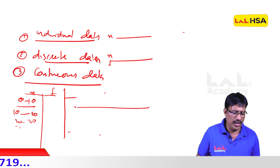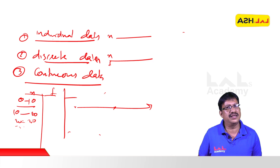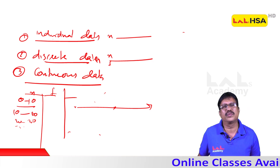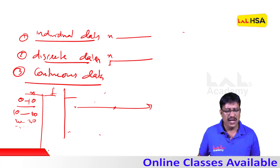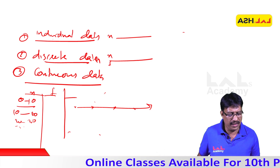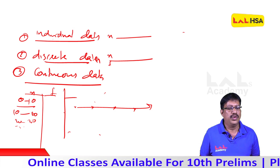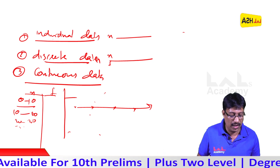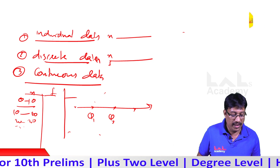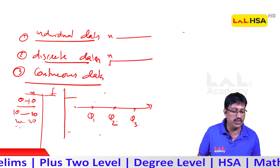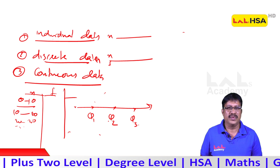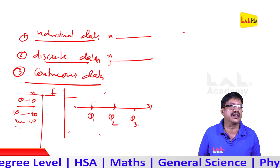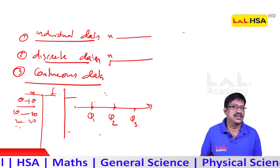Looking at 2 to 3 videos on this topic. This covers what we call Q1, Q2, and Q3. These are referred to as Chathur Thug, meaning quartiles.